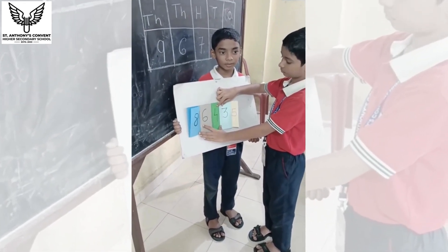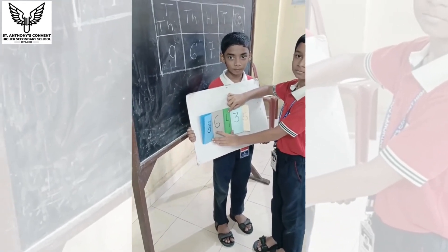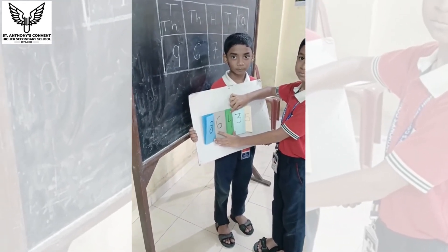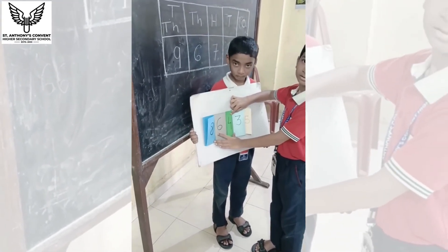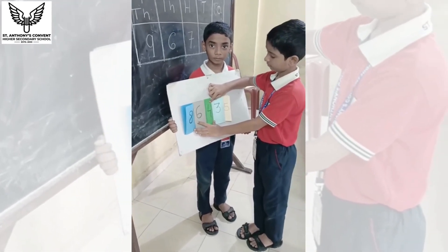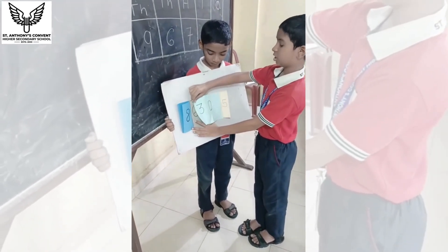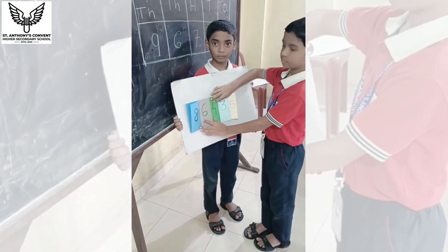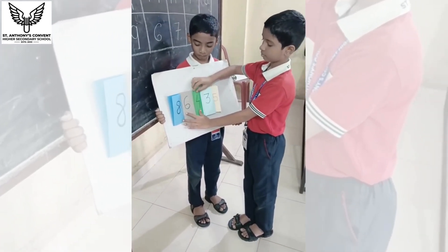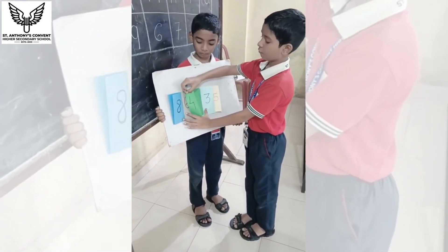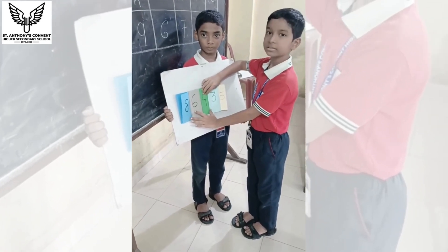So Aditya, now tell me what is the place value of number five? Five. What is the place value of number three? Thirty. What is the place value of number four, Aditya? Four hundred. It's four hundred.